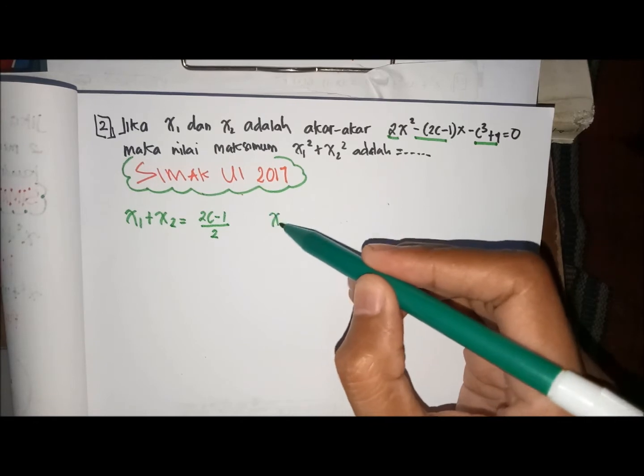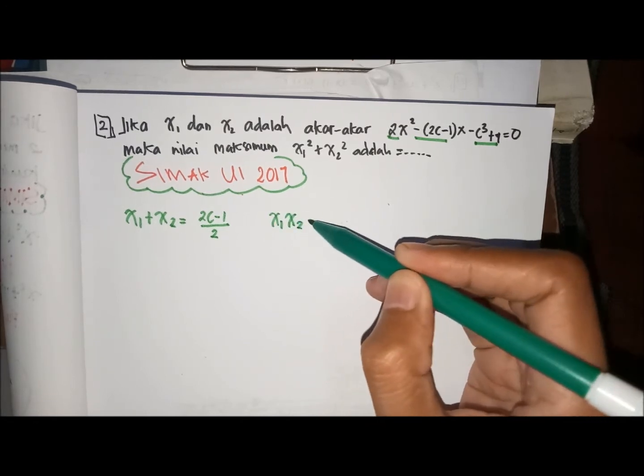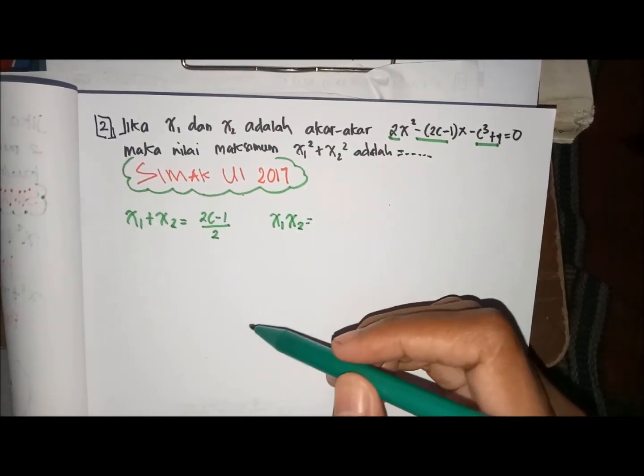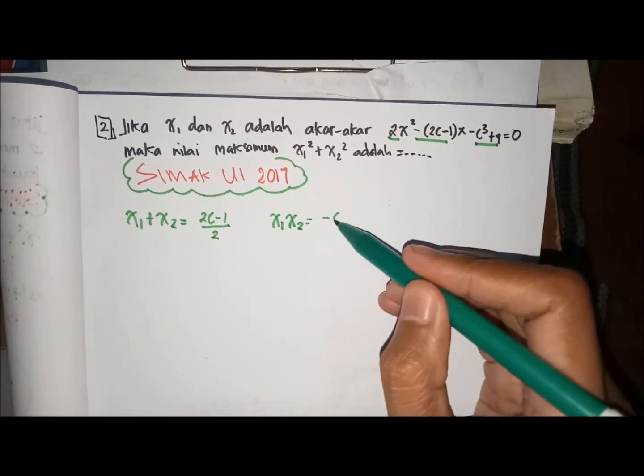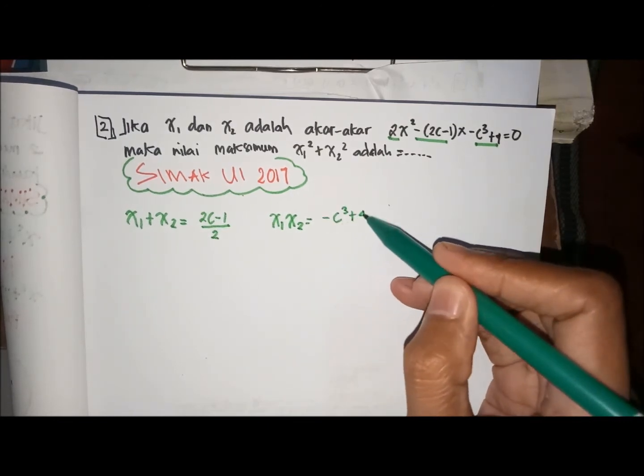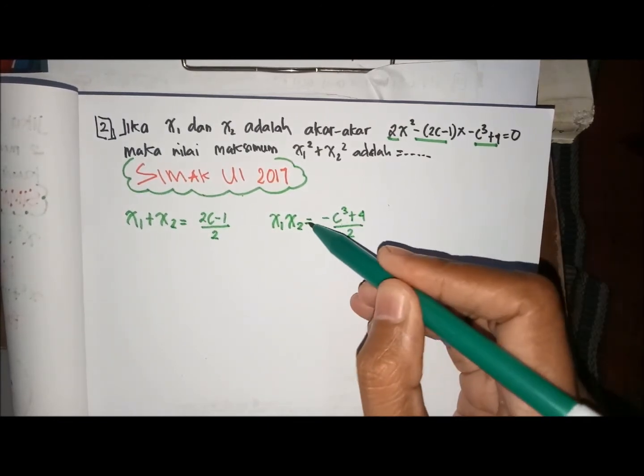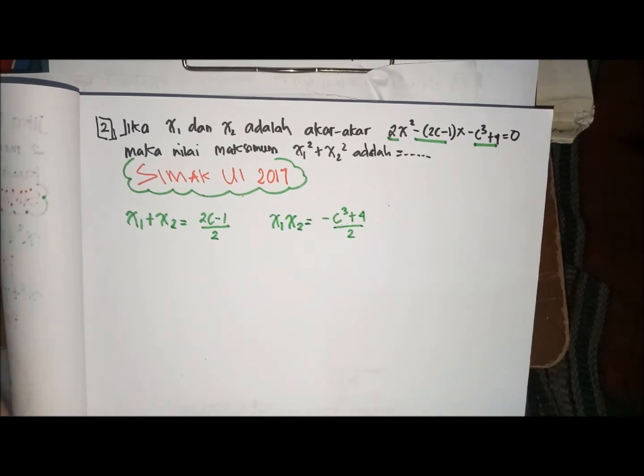Kemudian, kita cari X1 kali X2. X1 kali X2 itu adalah C per A, berarti min C bangka 3 plus 4 per 2. Padahal tujuan kita